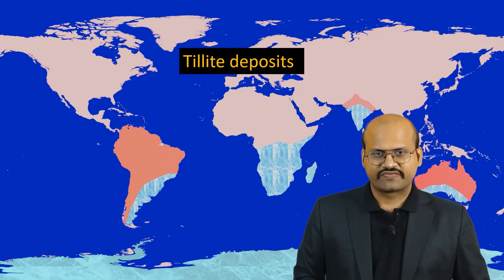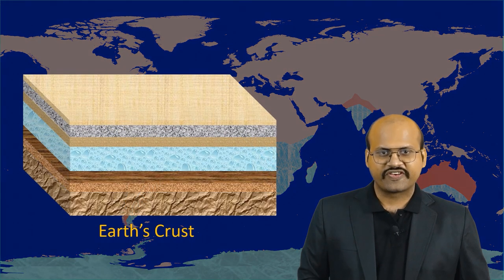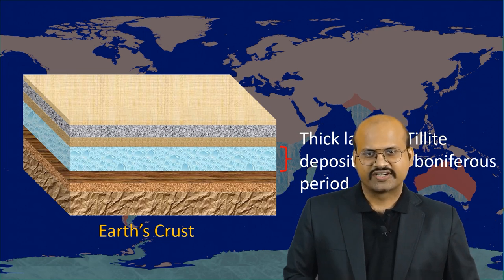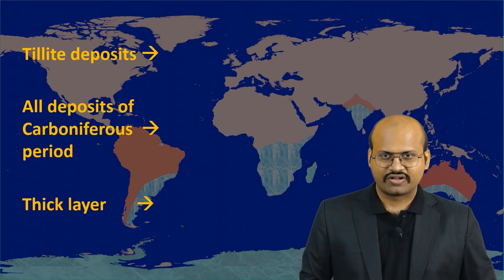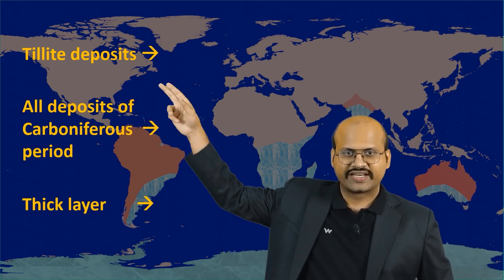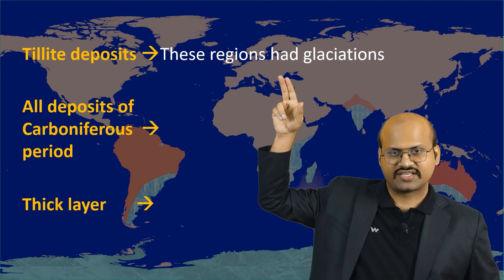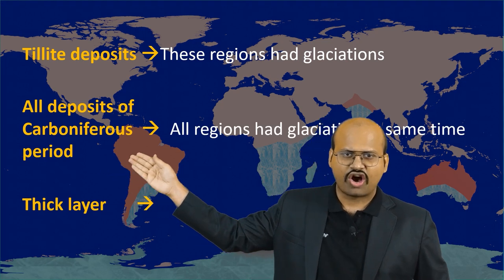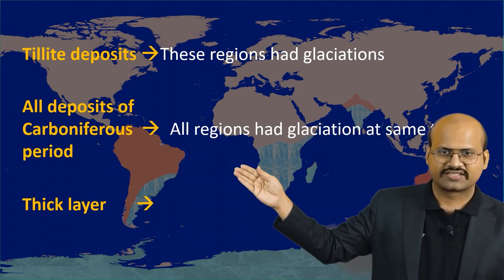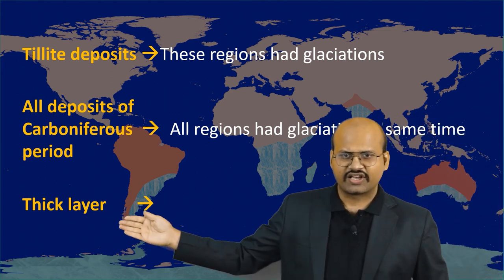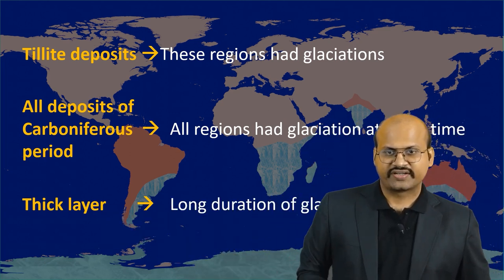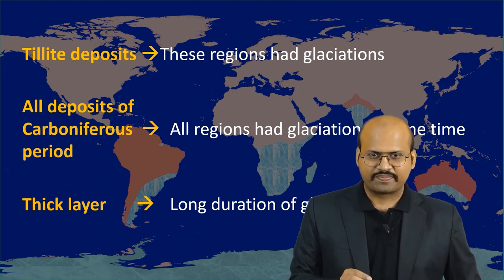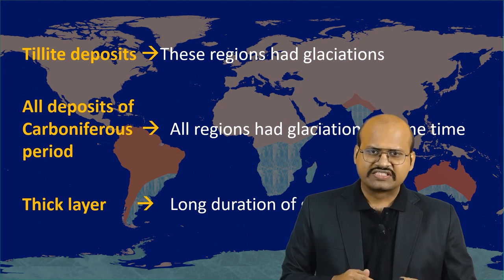The tillite deposits found across all these continents belonged to the Carboniferous period and showed thick layers of deposition. We can infer three things from these deposits. First, the tillite deposits confirm that these regions had glaciation. Since all deposits were of the Carboniferous period, all regions had undergone glaciation at the same time. Thick layers of deposits indicate that these regions underwent glaciation for a very long period — not a short period, but over centuries.